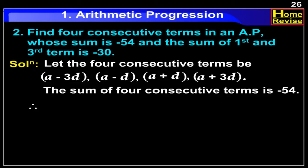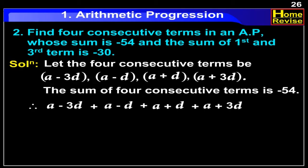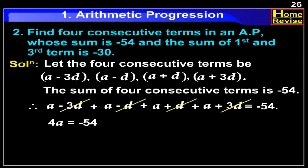Therefore, (a minus 3d) plus (a minus d) plus (a plus d) plus (a plus 3d) is equal to minus 54. Here, minus 3d and plus 3d get cancelled out. Similarly, minus d and plus d get cancelled out. Therefore, we have 4a is equal to minus 54. Therefore, a is equal to minus 54 divided by 4, so a is equal to minus 13.5.